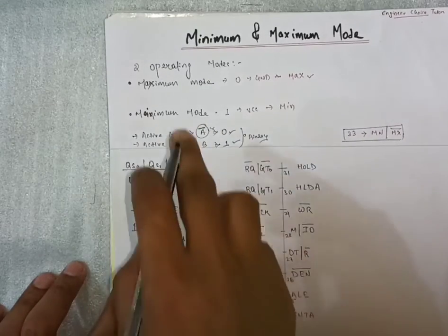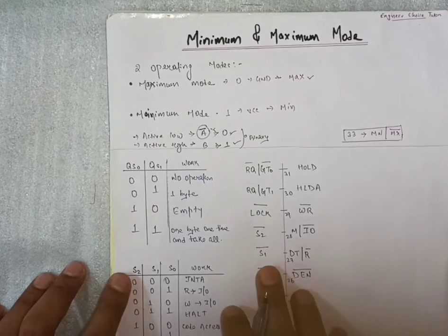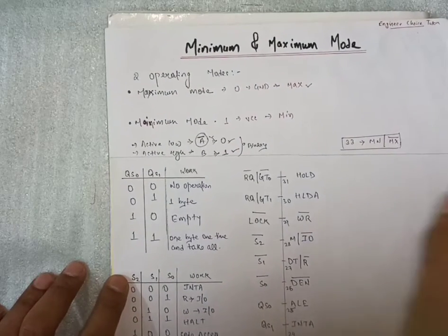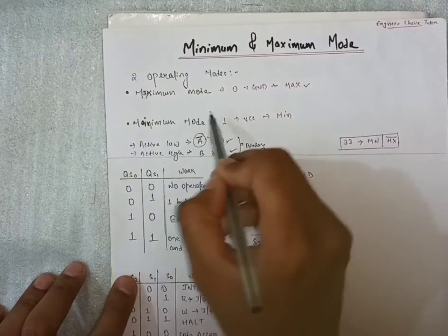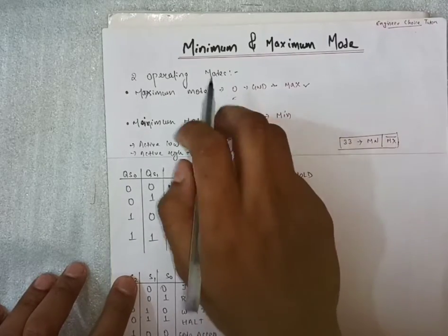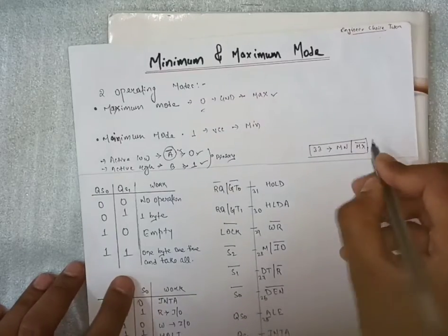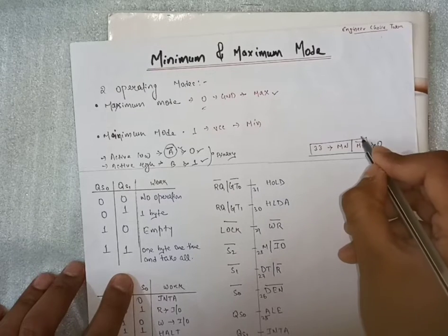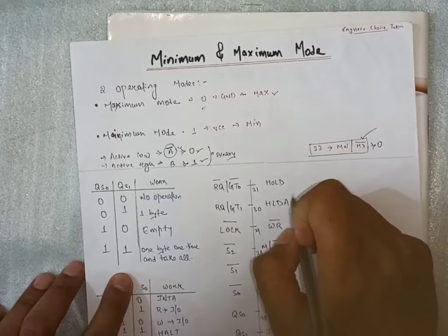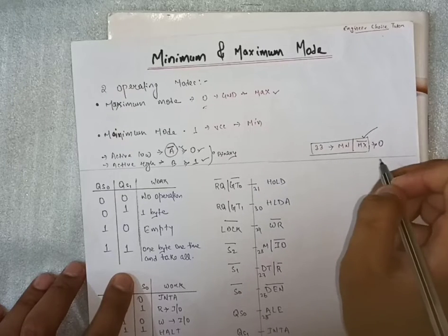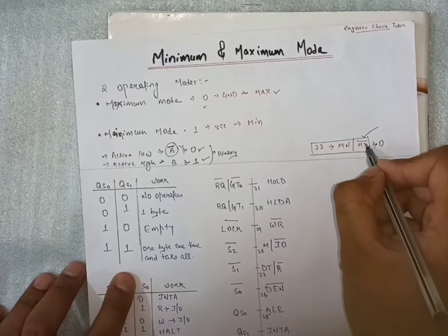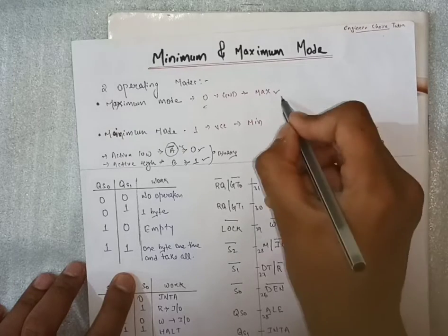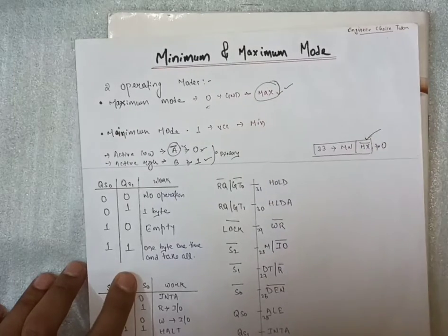Coming to our topic, in maximum and minimum modes, whenever the value will be zero means it's connected to ground. Suppose its value is zero means this pin is enabled and this is actively low pin. And what is that? This is minimum and this is maximum. So it works in maximum condition.